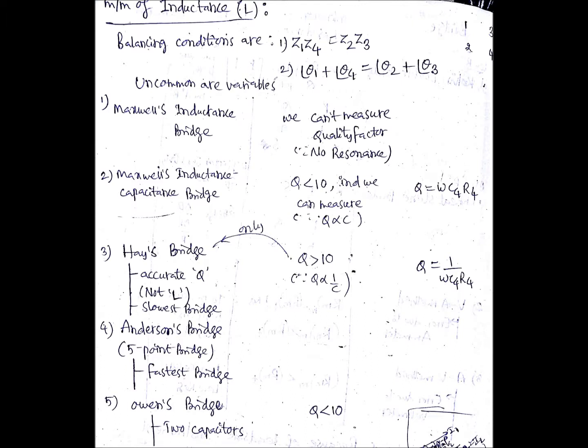Then fifth one is Owen's bridge. Here in this bridge, we are using two capacitors, and the quality factor is less than 10 here. These are the important points pertaining to the measurement of inductance.